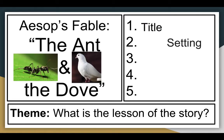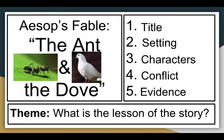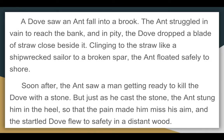We're going to be looking at the title, the setting, the characters, the conflict, and the evidence. But first we actually have to read the story, so we're going to read that and then go into those five aspects.